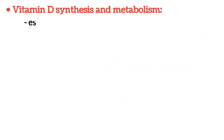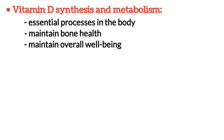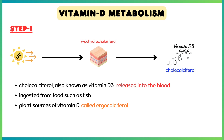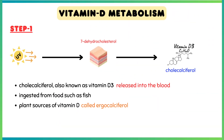Vitamin D synthesis and metabolism are essential processes in the body for maintaining bone health and overall well-being. In the first step, the primary source of vitamin D is sunlight. When your skin is exposed to ultraviolet B rays from the sun, a precursor molecule present in the skin epidermis called 7-dehydrocholesterol gets converted into cholecalciferol, also known as Vitamin D3, and it gets released into the blood. Cholecalciferol is also ingested from foods such as fish, while plant sources such as mushrooms contain ergocalciferol.